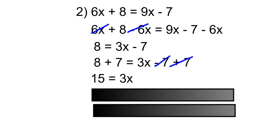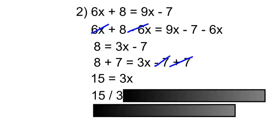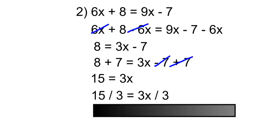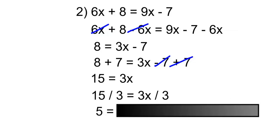And the last step: to remove the 3 times x, we have to divide both sides by 3. 15 divided by 3 is equal to 3 times x divided by 3. 15 divided by 3 is 5. The times 3 and the divided by 3 will cancel, leaving us with x.